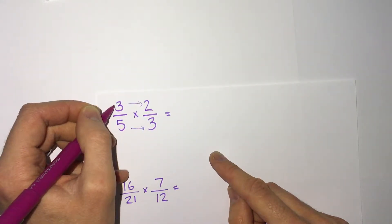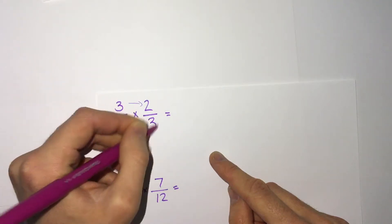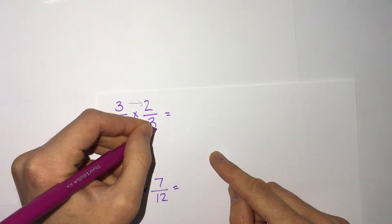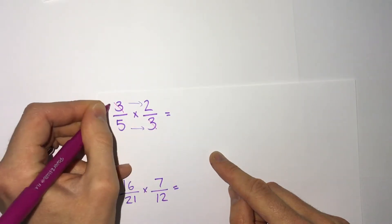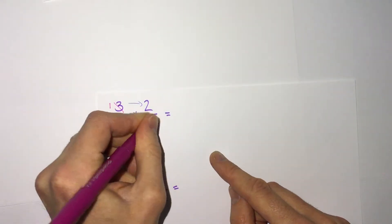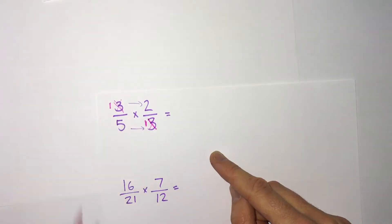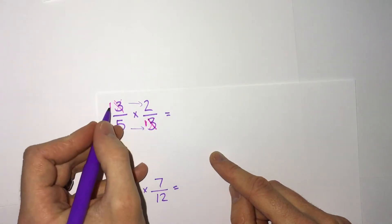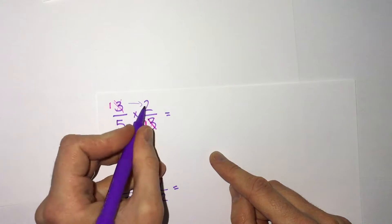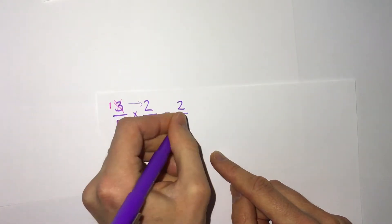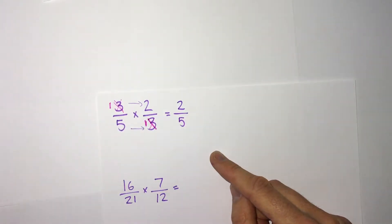So if something on the top — let's say like 3 — cancels with something on the bottom, also 3 here. 3 and 3: we can both divide by 3 and reduce those to 1. So we cancel these out. 3 goes into 3 one time, so we get 1, and 3 goes into 3 one time, so we get 1. Then we multiply our new numbers: 1 times 2 is 2, and 5 times 1 is 5, giving us 2 fifths.